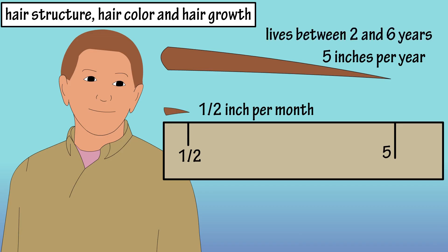Scalp hair can live between two and six years, then die, and are replaced by new hairs. As we age, hair may thin, or baldness can develop, with heredity being the main cause.